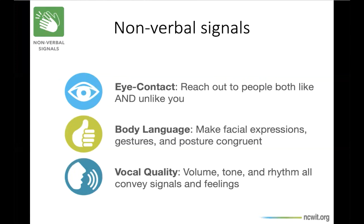And then there's body language. Facial expressions, gestures, and posture are the most obvious elements of body language. Smiling with open arms and palm-up hands are universal signals for inclusion. Making your gestures, posture, and eye contact all congruent with your message signals clarity and honesty. For example, what does your body language say to students who come to your office hours?